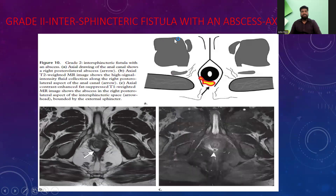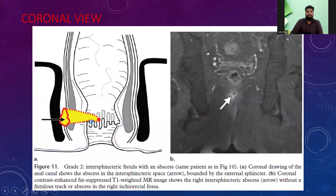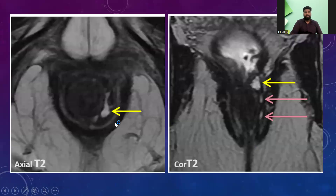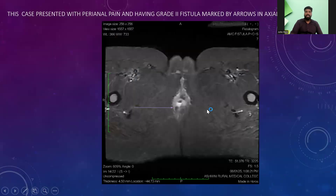Grade 2 is an intersphincteric fistula with an abscess. The abscess is seen here in the coronal view. These are the cases that presented with perianal discharge and were found to have a Grade 2 fistula, as marked by the arrows, in the actual coronal fistula view. Zoomed images are shown here. Another patient presenting with perianal pain was also found to have a Grade 2 fistula.